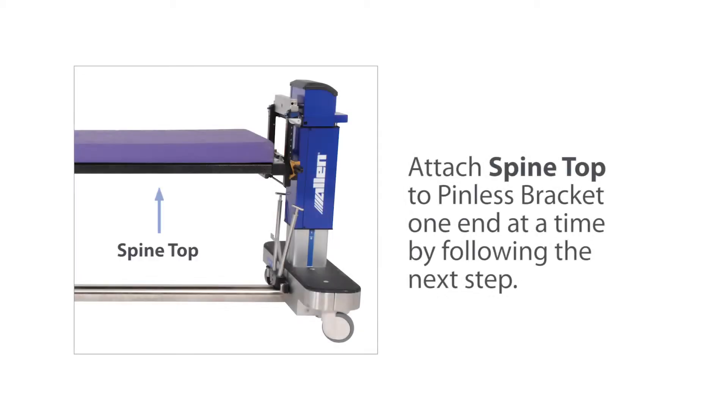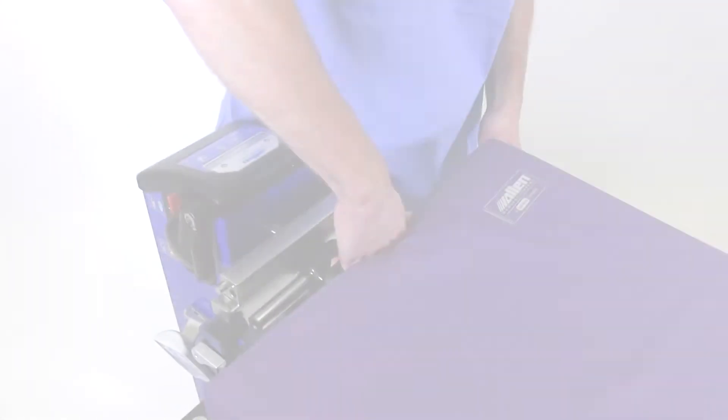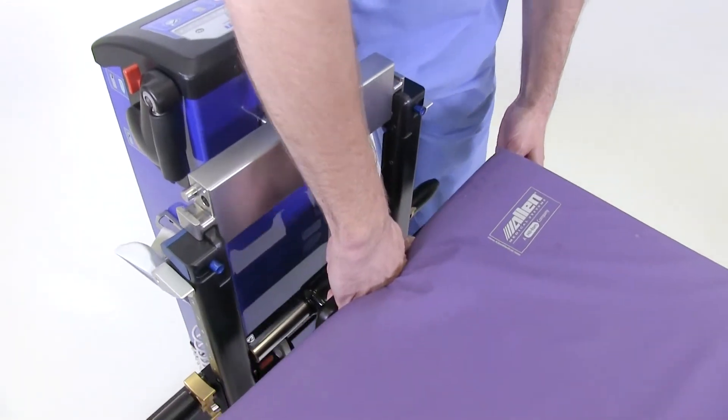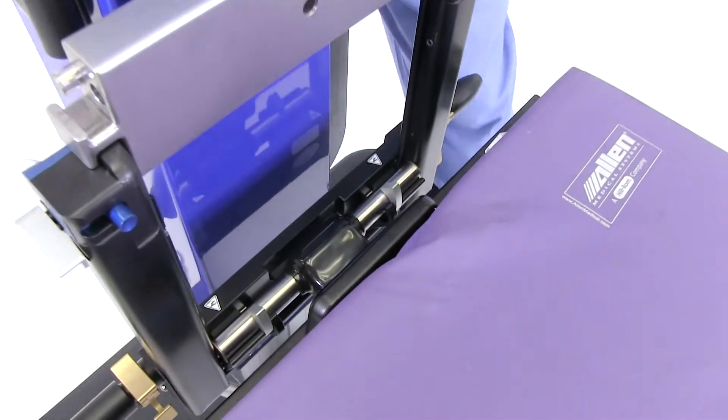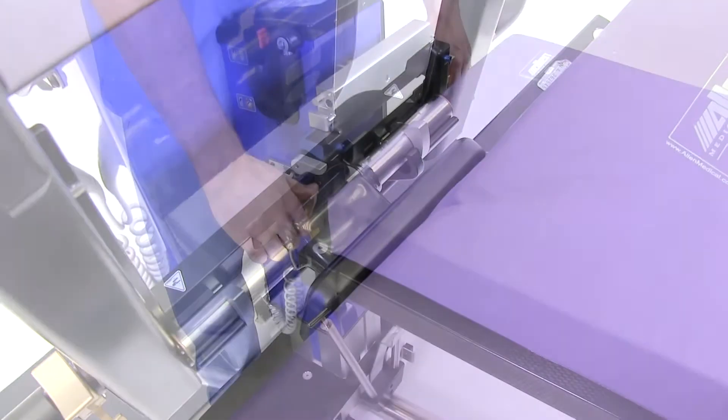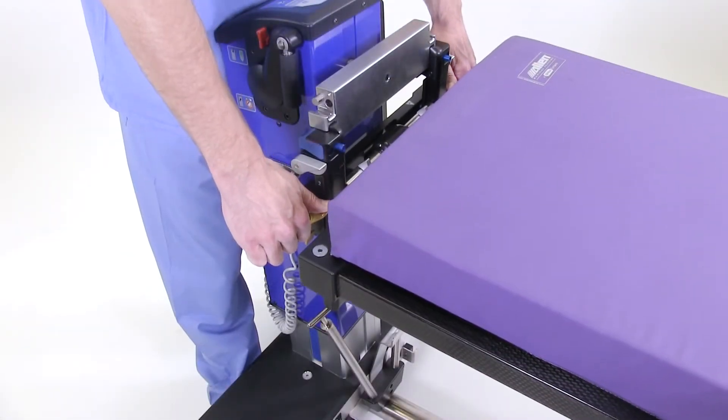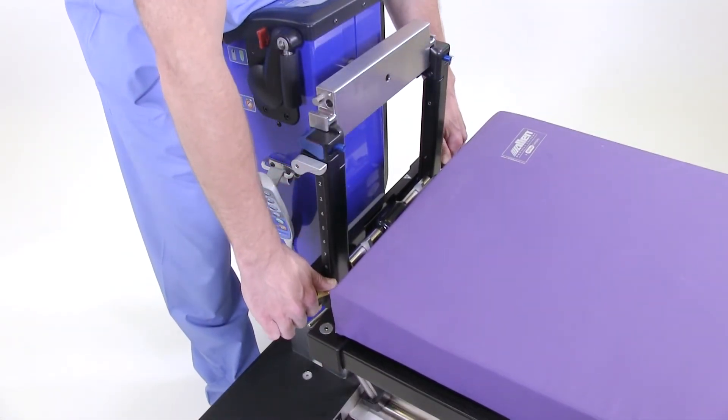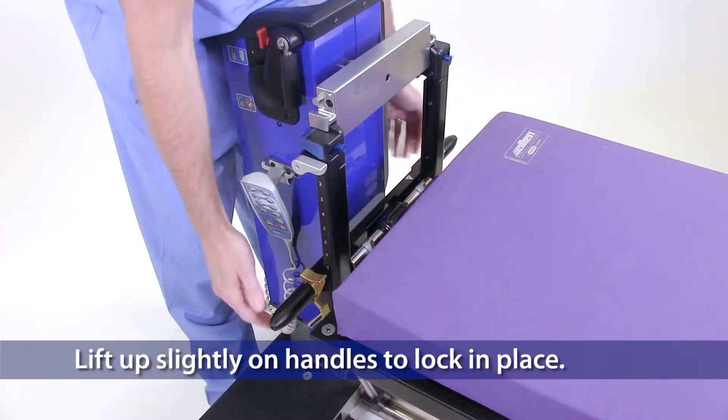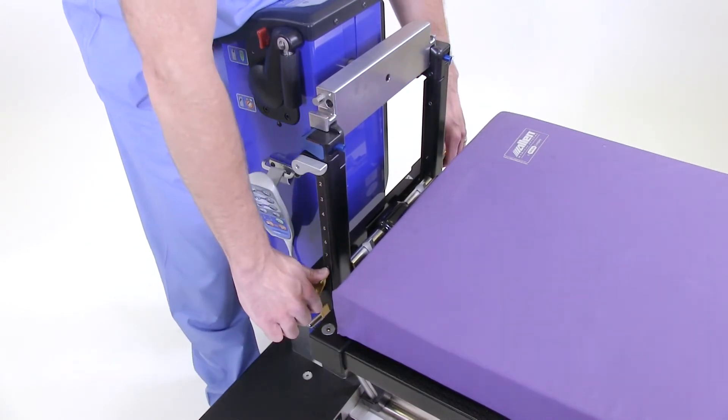Attach spine top to pinless bracket one end at a time by following the next step. Align the table loading bar between the bracket uprights. Slide down until bottoming out under the silver hooks. The height can be easily adjusted by advancing forward the two gold height adjustment levers and raising or lowering the top to the desired height.